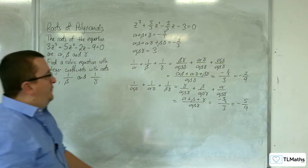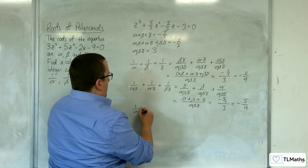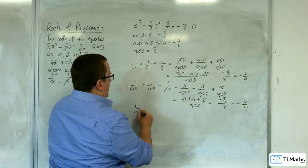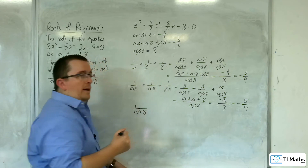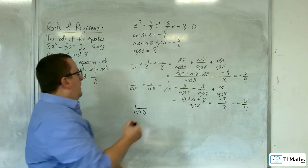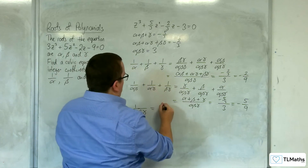And finally, we have 1 over alpha times 1 over beta times 1 over gamma, which is the same as 1 over alpha beta gamma, which is just 1 over 3.